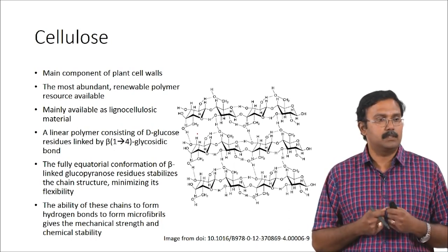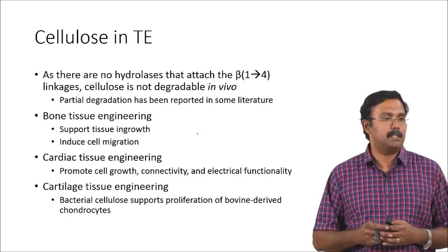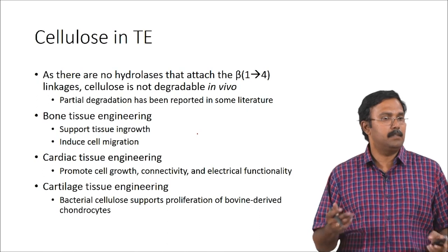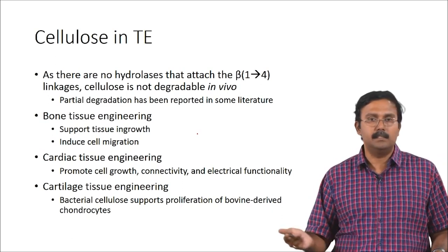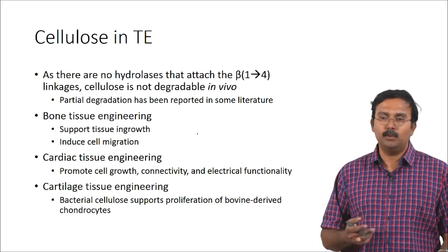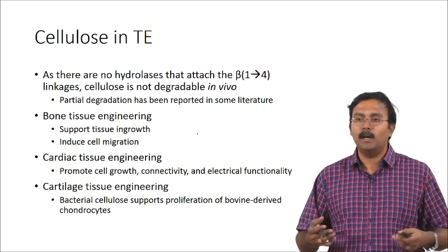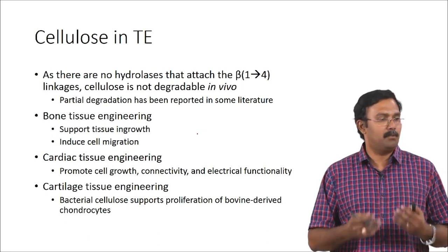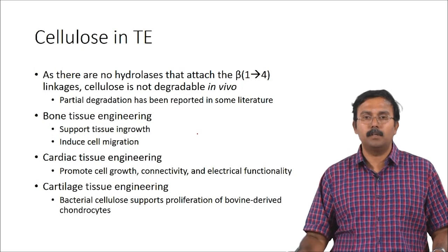Cellulose is a very mechanically strong material. People have tried to use it for different tissue engineering applications although it is not degradable. People have actually seen that partial degradation can be obtained in vivo, but there are no hydrolases in your body which can actually degrade these linkages and therefore it is non-degradable in vivo. People have tried to use this for bone tissue engineering and shown that cellulose actually supports bone in-growth and also induces cell migration, showing some kind of bioactivity. Cardiac tissue engineering applications have been shown to have promise because they show cell growth, connectivity, and also some electrical functionality while using cellulose as the major component of the scaffold.